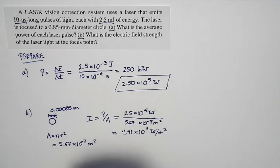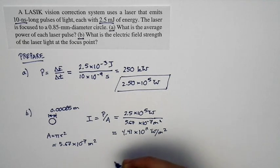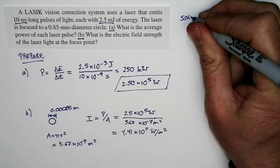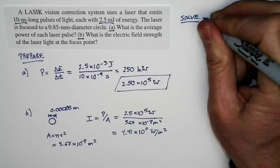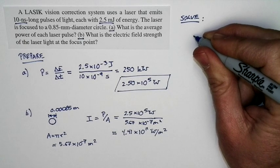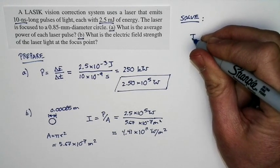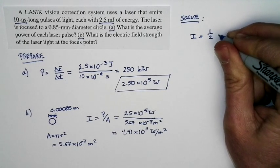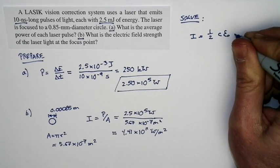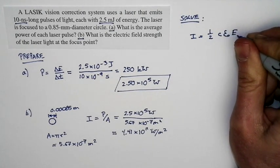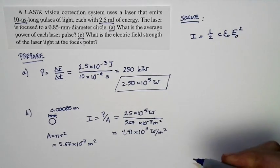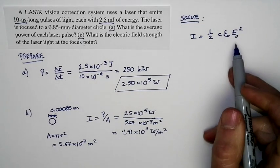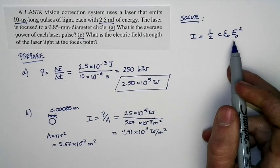And now, we're ready to solve for the electric field. The electric field is related to intensity via this expression right here. I'm just going to jump over to the solve portion. We know from the chapter that the intensity is equal to one half times C times epsilon zero times the magnitude of the electric field squared.